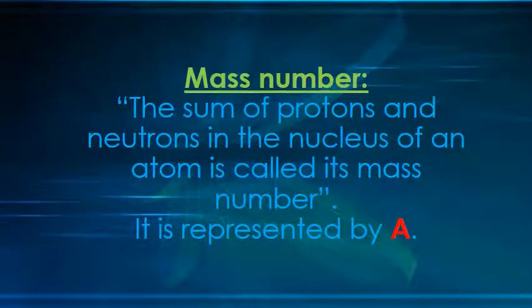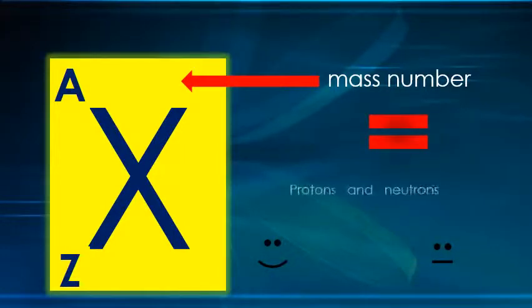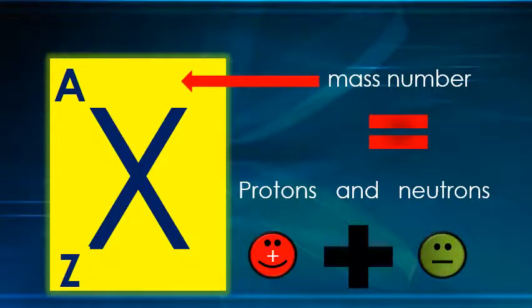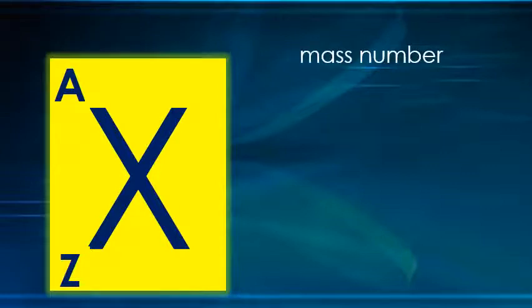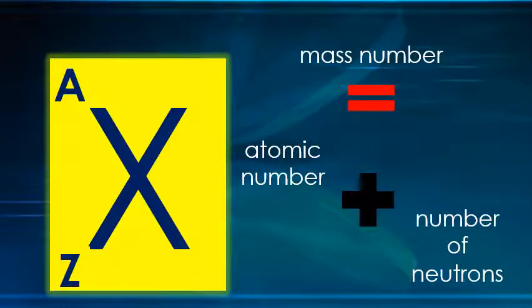Now, what is mass number? The sum of protons and neutrons in the nucleus of an atom is called its mass number, and it is represented by capital A. So mass number equals atomic number plus number of neutrons.